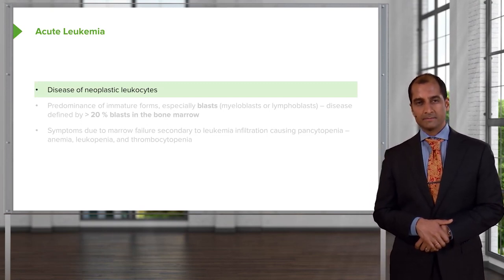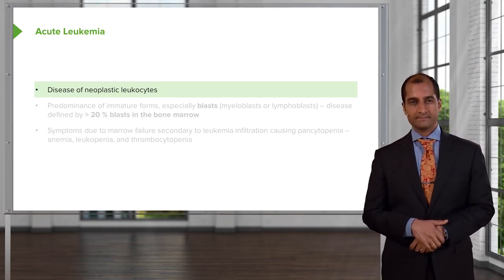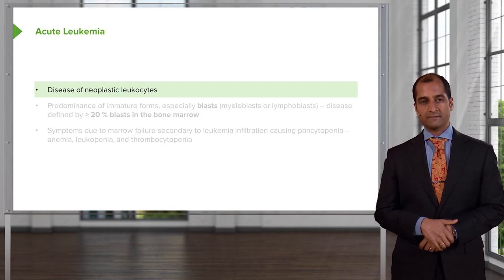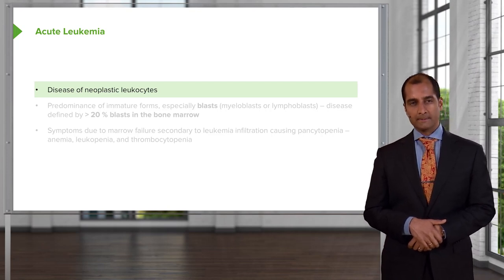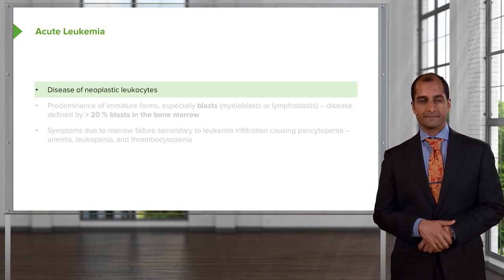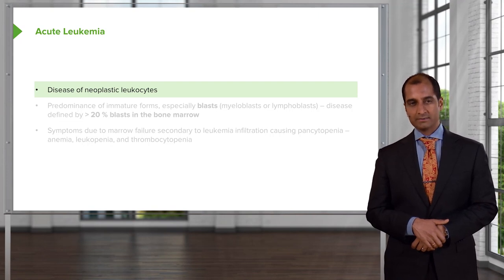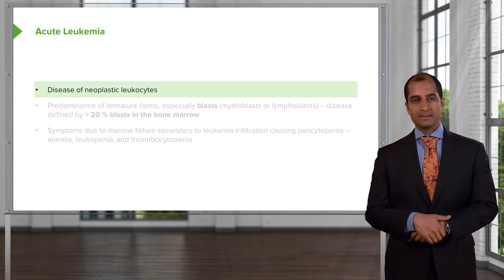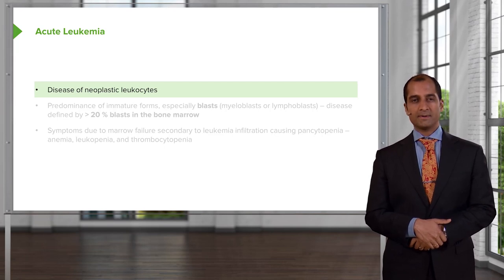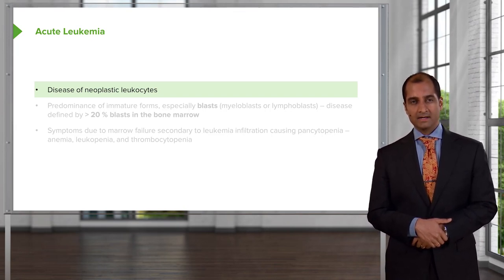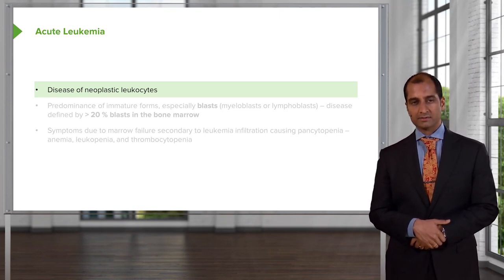Acutes. What does acute mean to you? It means fast. Leukemia means cancer — a cancer developing from the bone marrow. That's where your focus will be initially. However, at some point in time, you will find an increased number of cells on your peripheral blood smear, which puts us into leukemia. These cells might enter a lymph node, and the presentation here might be very much like a lymphoma.